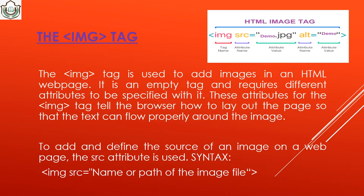To define the source of an image, the src attribute is used — src is short for source. You write the img tag, then src equals the name or path of the image file, for example image.jpg or animal.jpg. Make sure your HTML file and image are in the same location, otherwise you may get an error or you must provide the full path. Also use the alt attribute for an alternative message — if the image is missing, this message will appear.